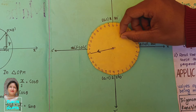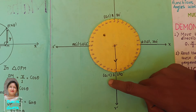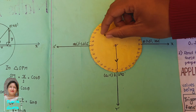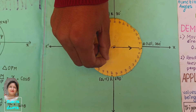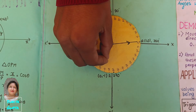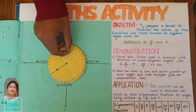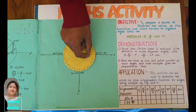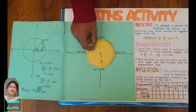We can also find cos 270°, which equals 0, and sin 270°, which equals -1. You can also find the values of cos 360° and sin 360°, which equals 0. By this model you can also find the other trigonometric functions for angles that are multiples of π/2 and π. Thank you.